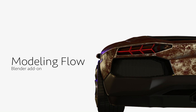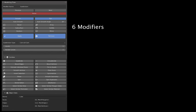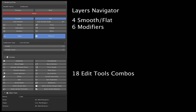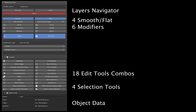Modeling Flow is built to enhance your modeling workflow by providing shortcuts to the most used Blender tools. It includes six modifier shortcut buttons, four smooth/flat controls, a modifier layers navigator, 18 edit tools combos, four selection tools, and an object data section with an editable object name.